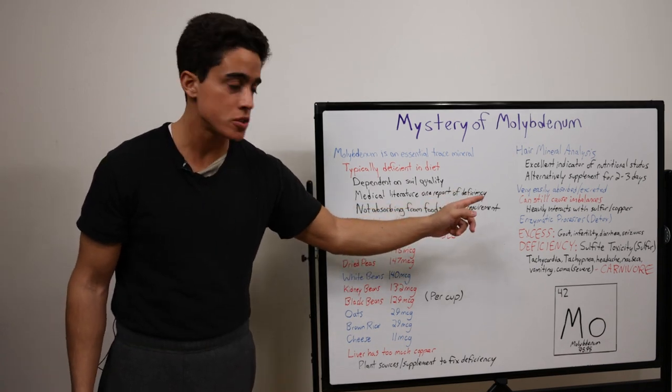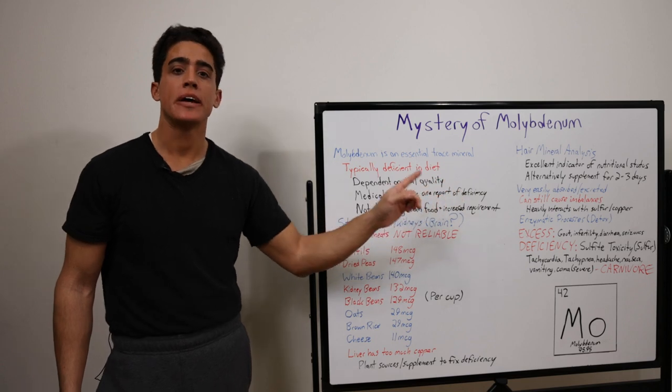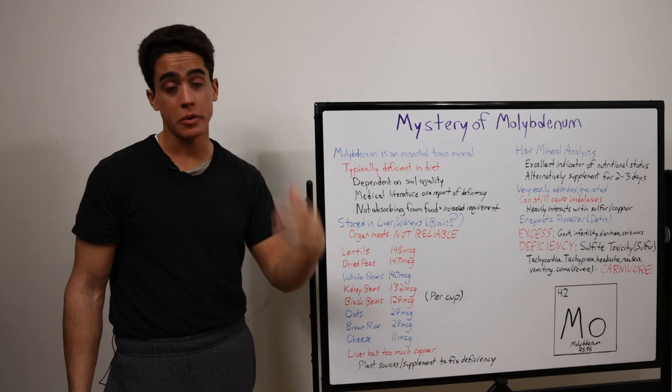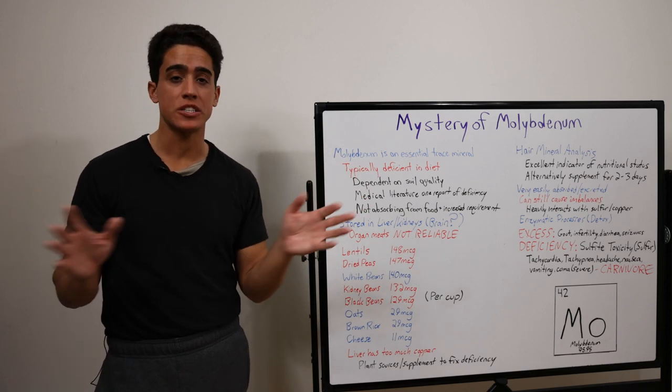So the main synergistic minerals with molybdenum are sulfur and copper. And if you guys missed my video on the mineral wheel, I don't know, maybe a year ago at this point, definitely check it out.